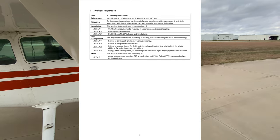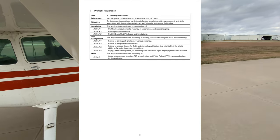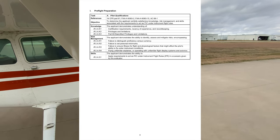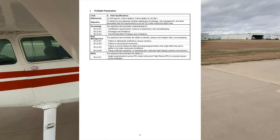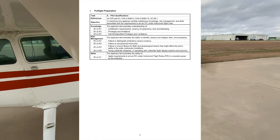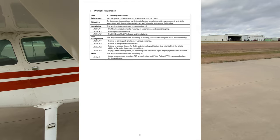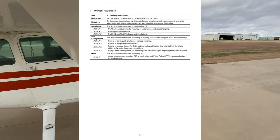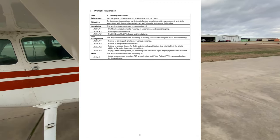Let's move on to Kilo 2: privileges and limitations. A commercial pilot without an instrument rating cannot carry passengers further than 50 nautical miles or at night. This is on 61.133(b)(1). You must file a flight plan and receive a clearance, and you can't legally accept and file an IFR clearance without an instrument rating. This is on 91.173.